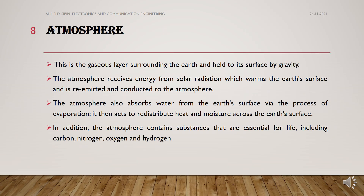Coming to the atmosphere: the atmosphere is the gaseous layer surrounding the Earth, held to its surface by gravity. It receives energy from solar radiation, which warms the Earth's surface and is re-emitted. The atmosphere absorbs water through the process of evaporation and redistributes surface heat and moisture. The atmosphere contains substances essential for life, including carbon, nitrogen, oxygen, and hydrogen.